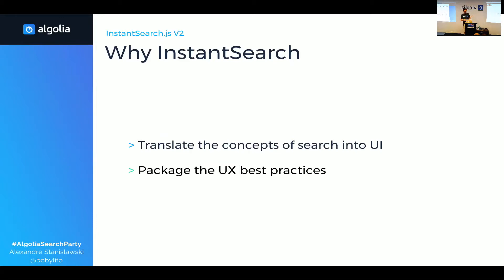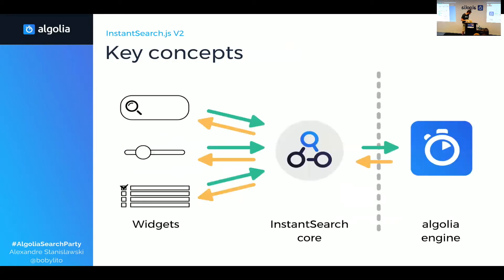Let's look at the key concepts of this library. In InstantSearch, you have widgets and you have InstantSearch — the core. When a user interacts with widgets, it tells InstantSearch that something has changed. Then InstantSearch creates the query to Algolia, and when the results come back from Algolia, they are propagated to the widgets.